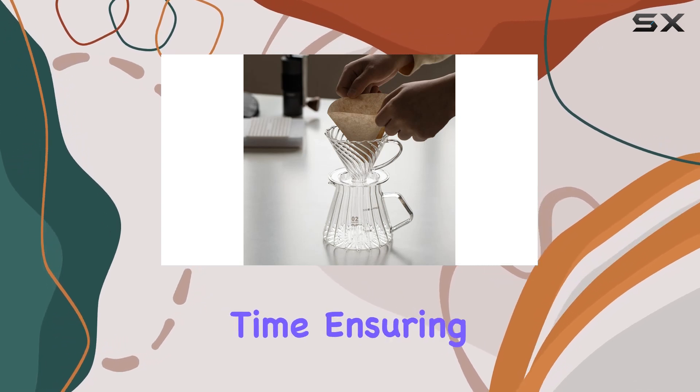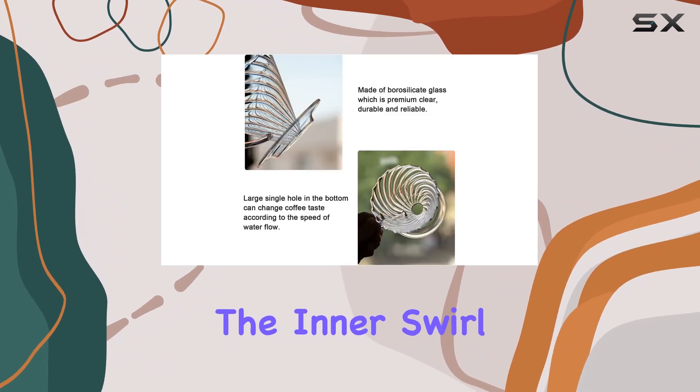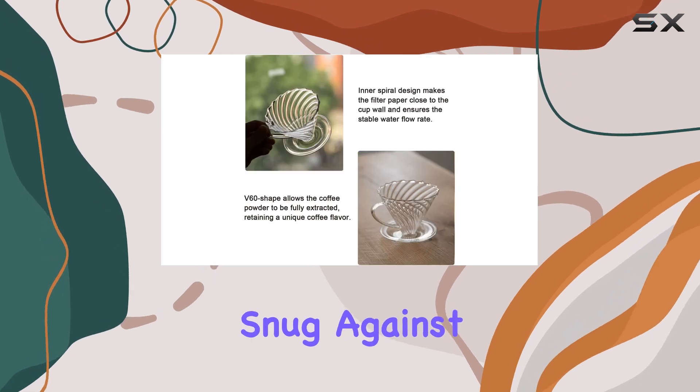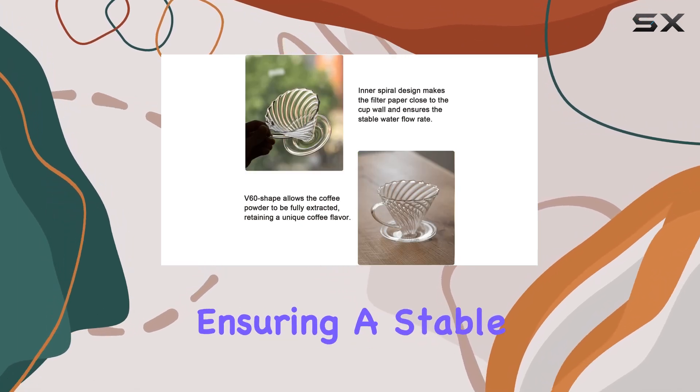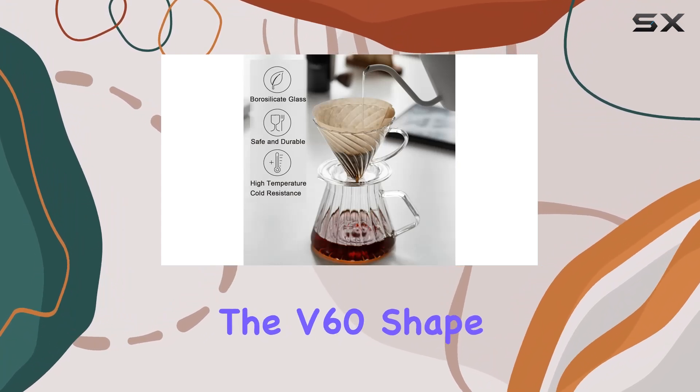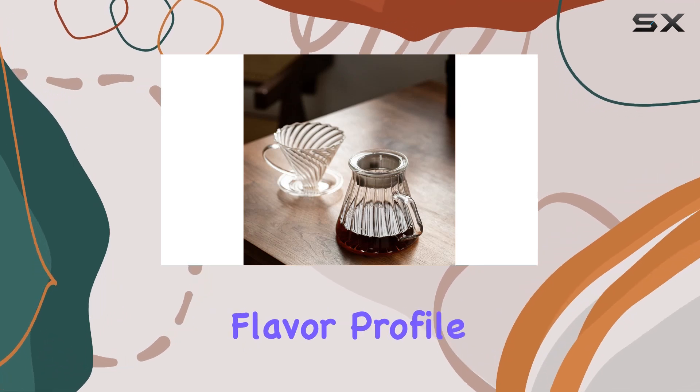Now on to design. The inner swirl design is a stroke of genius—it keeps the filter paper snug against the cup wall, ensuring a stable water flow rate for optimal extraction. Plus, the V60 shape allows the coffee grounds to be fully saturated, unlocking that unique and robust flavor profile we all crave.